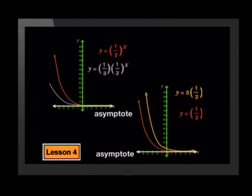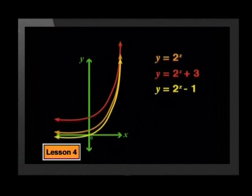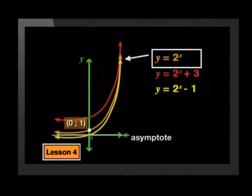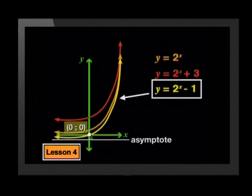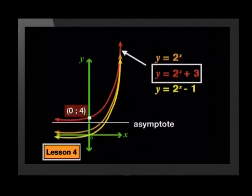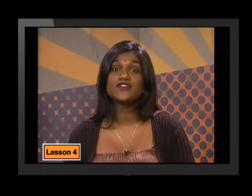Looking at graphs where we change the a-value, the y-intercept was affected by a but the asymptote was not. When we change the q-value, the whole graph shifts q units up or down. The y-intercept shifts q units up or down from the point 0, 1. The change in q also affects the asymptote — the new asymptote lies on the line where y equals the q-value.